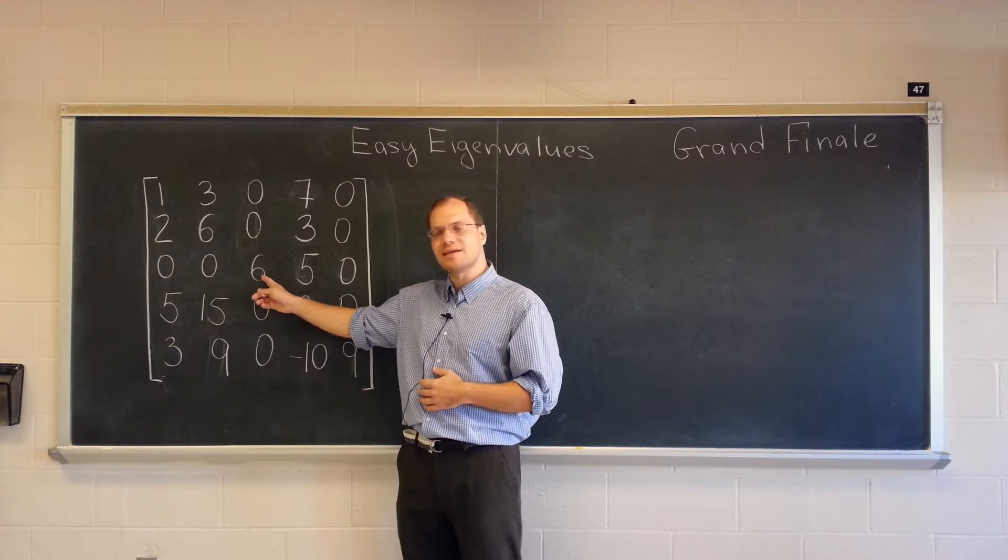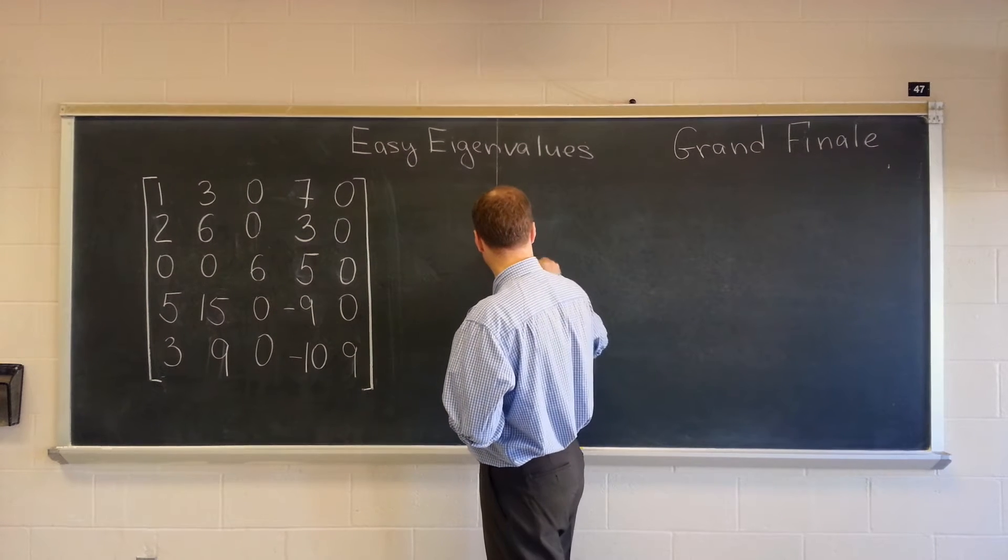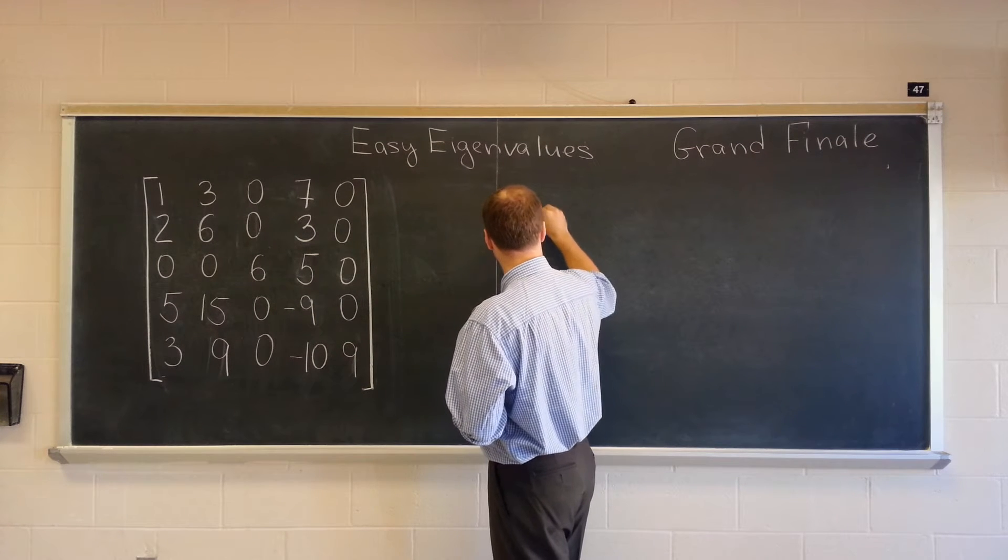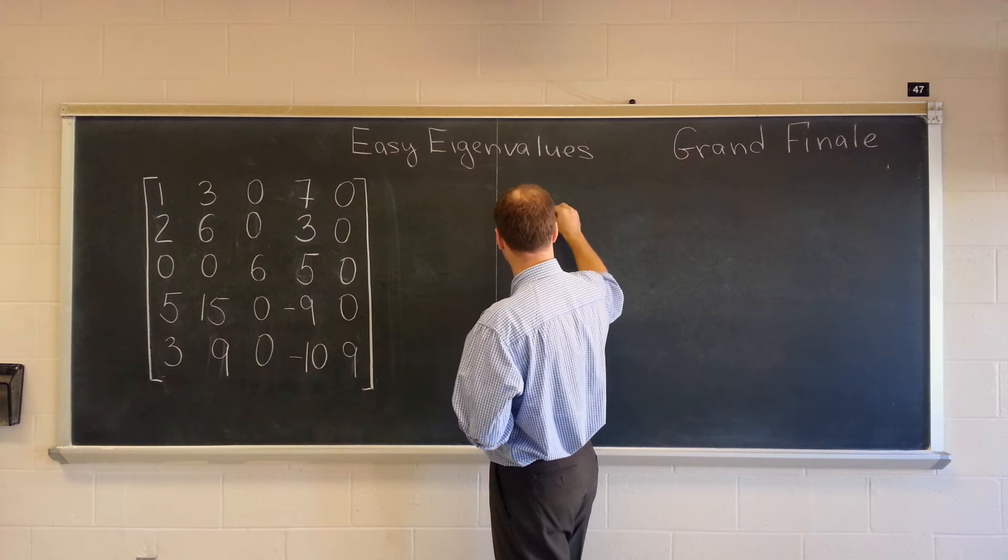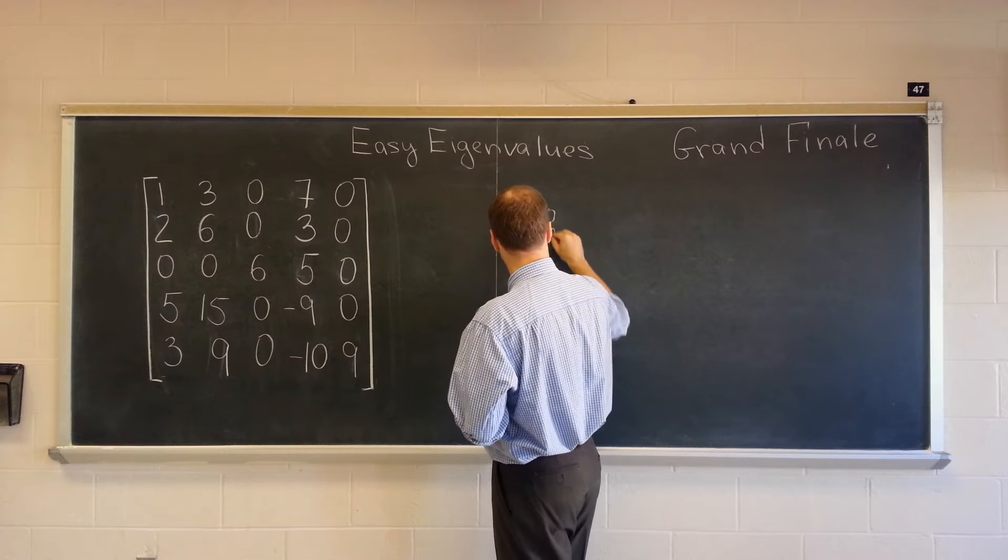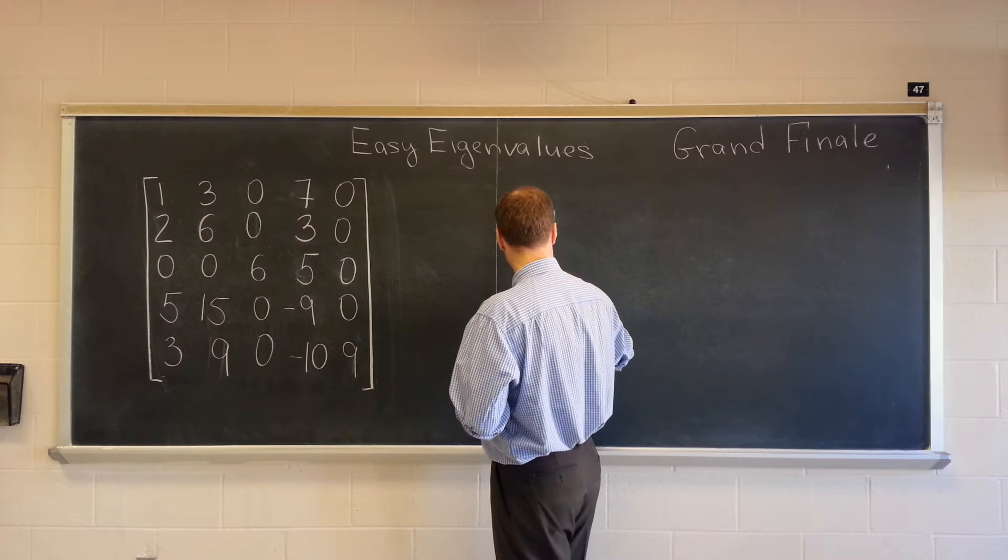The first one that jumps out at me is 6 from eigenvalue feature number 1. The corresponding eigenvector, because everything is happening in column 3, being 00100.